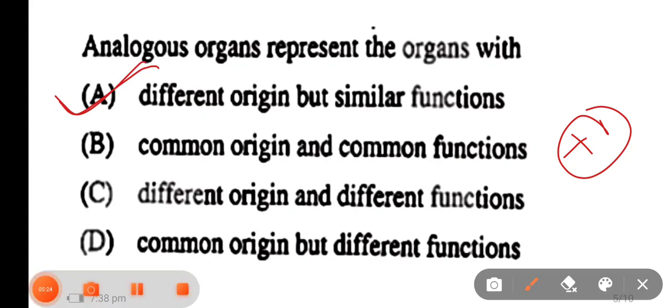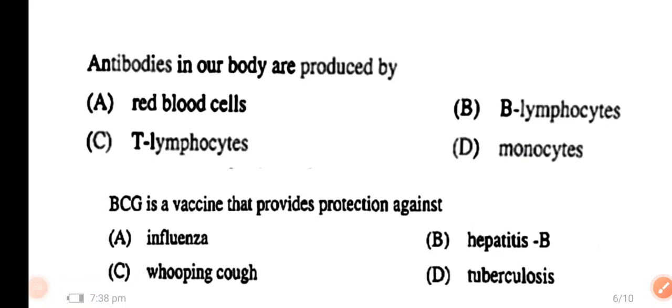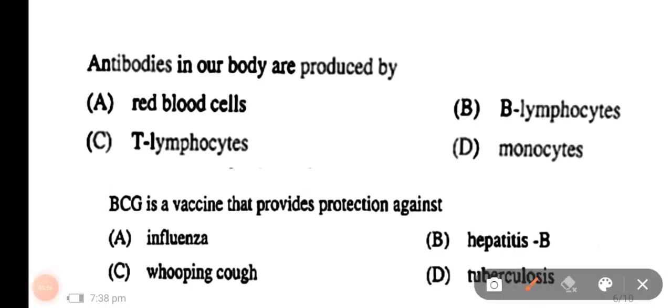Question number 6: antibodies in our body are produced by — the options are red blood cells, B lymphocytes, T lymphocytes, and monocytes. The right answer is B lymphocytes.